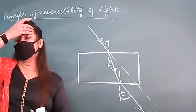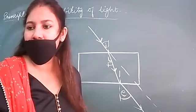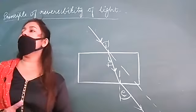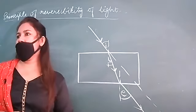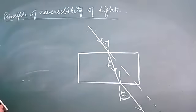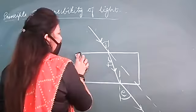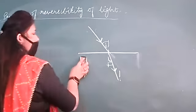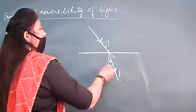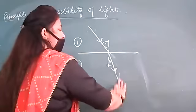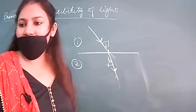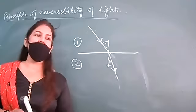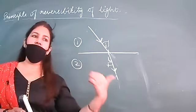Write down the statement: It states that if the path of a ray of light is blocked after any number of reflections or refractions, then it will retrace its path. It will go back along the same path.